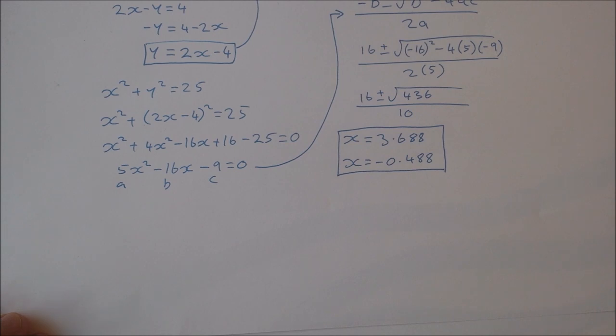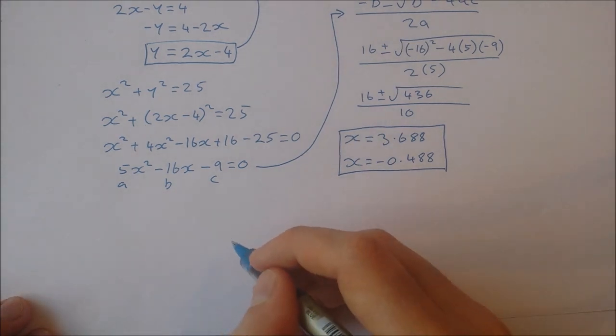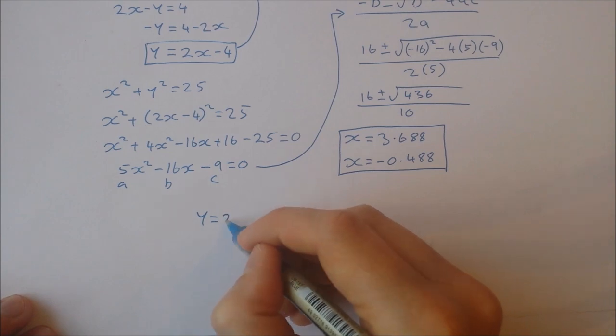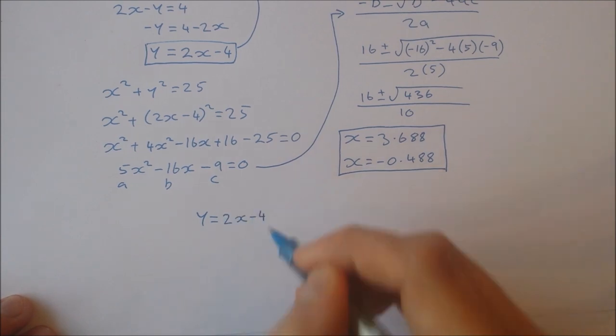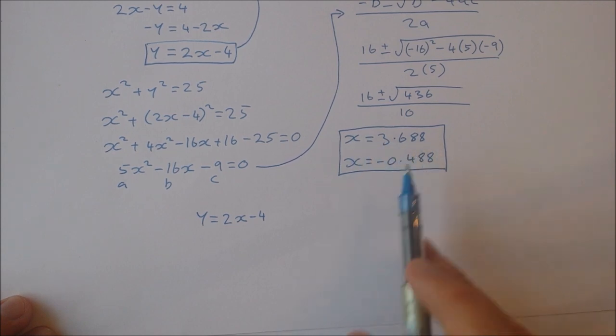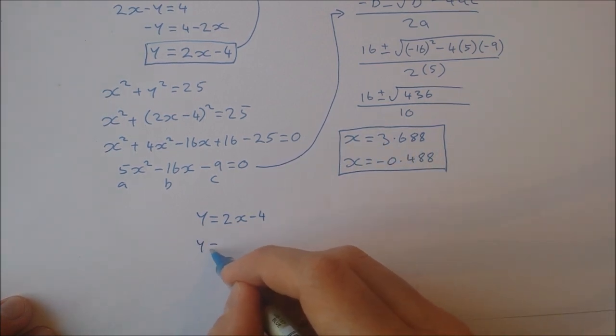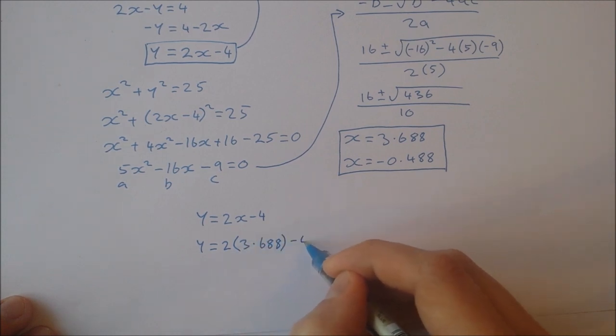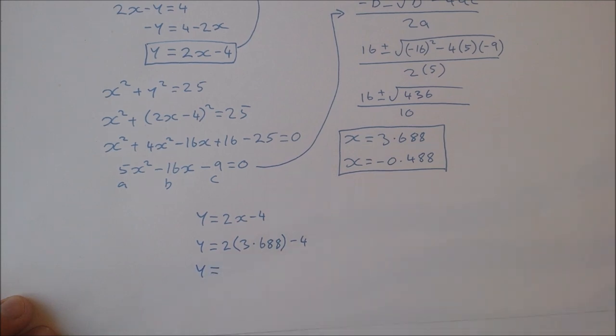So I go back to my equation of my line which is y equal to 2x minus 4. And all I'm going to do is I'm going to substitute in each of these individually. So y is equal to 2 times the first one, 3.688 minus 4. That works out to be y equal to 3.376.